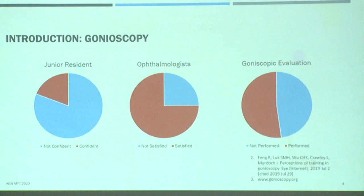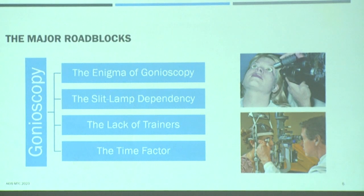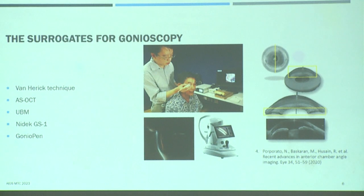80% of junior residents are not confident doing gonioscopy, while 25% of practicing ophthalmologists who perform it are not happy with their skill. The major roadblocks include the enigma of the skill itself, the dependency on slit lamp, the lack of quality trainers, and the time it requires in a busy OPD. We don't have feasible options that can reliably replace gonioscopy.